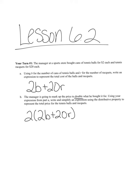So now, using the distributive property, we're going to take 2 times 2B and 2 times 20R. 2 times 2B is 4B, and 2 times 20R is 40R.